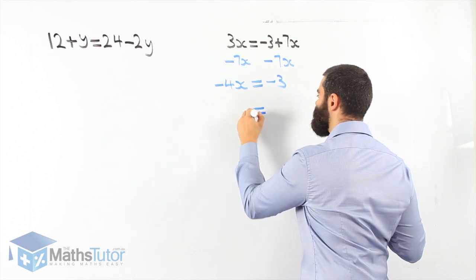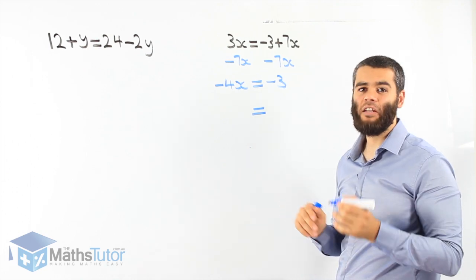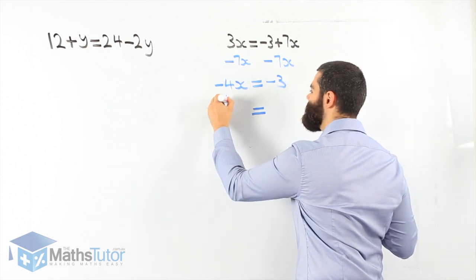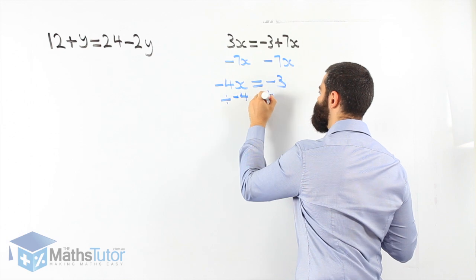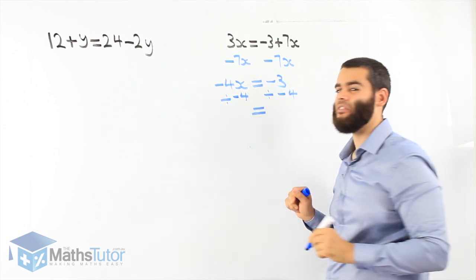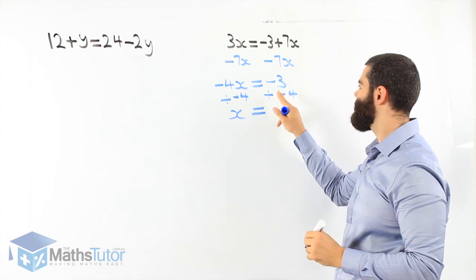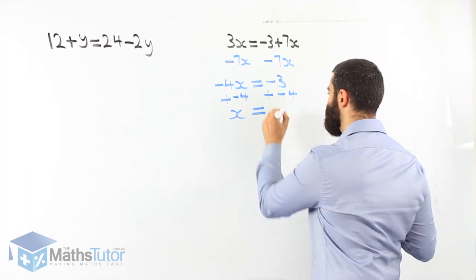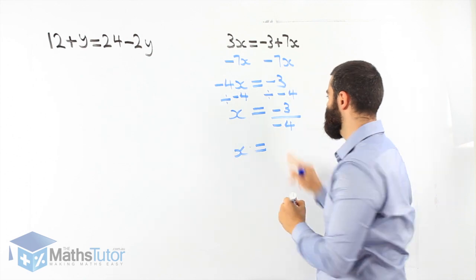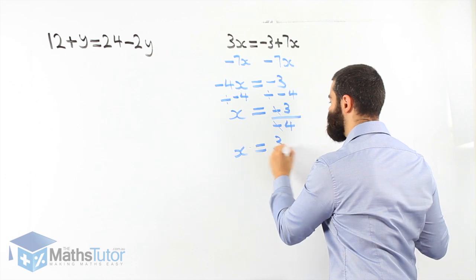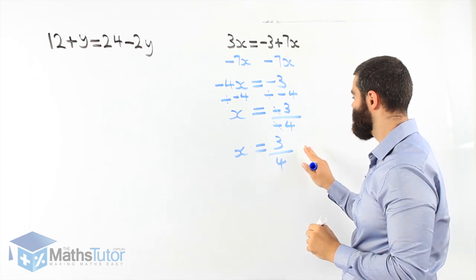Now we only want x. Negative 4x is the same as negative 4 times x, so the opposite is divide by negative 4 on both sides. Negative 4 divided by negative 4 leaves us with 1x. Negative 3 divided by negative 4 — the negatives cancel out. Our answer is simply 3 quarters. Very easy and simple to understand.